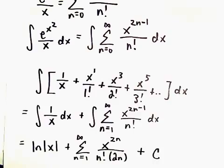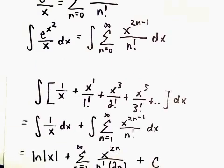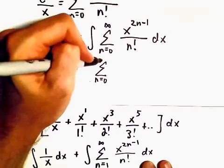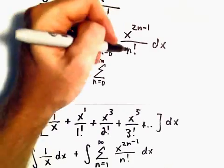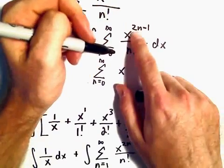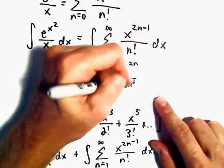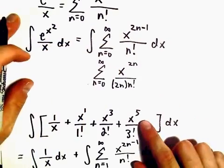You have to be a little careful because if we just integrated this immediately, we would have n=0 to infinity. When we add 1 to the exponent, we would get x^(2n) over 2n times n factorial. That's what I was recognizing.